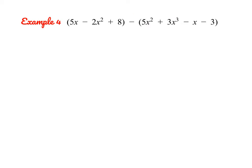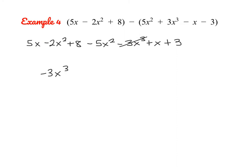Let's try one more together. Again, we need to really carefully distribute that negative to all of the terms in the second polynomial. So it becomes minus 5x squared minus 3x cubed plus x plus 3. I really recommend that you rewrite the problem or at least rewrite the second polynomial. Then we just start combining like terms. We have a single x cubed term — negative 3x cubed. Then negative 2x squared and negative 5x squared gives us negative 7x squared. 5x plus 1x gives us 6x. And 8 plus 3 is 11.